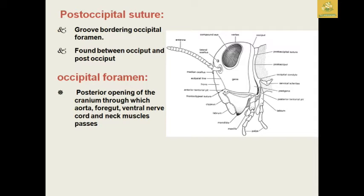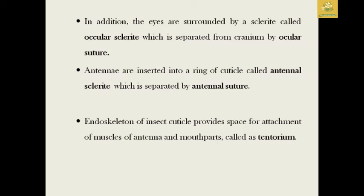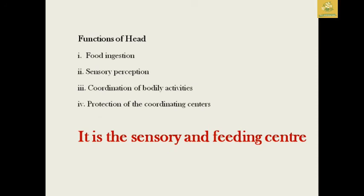The occipital foramen is the posterior opening of the cranium, and the suture used to cover the foramen guards the ventral nerve cord as well as the neck muscles. In addition, the eyes are surrounded by sclerites known as ocular sclerites, separated from the cranium by the ocular suture. The antenna is inserted into a ring of cuticle known as the antennal sclerite, separated by the antennal suture. The endoskeleton of insect cuticle that provides space for muscle attachment of antenna and mouth parts is called the tentorium.